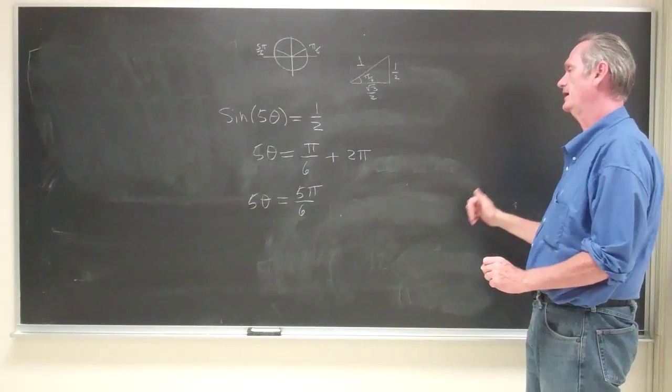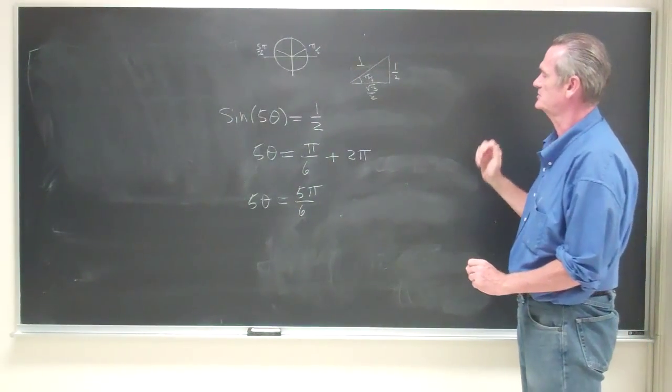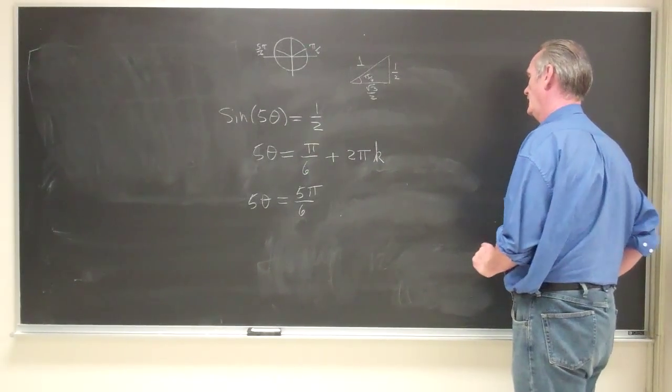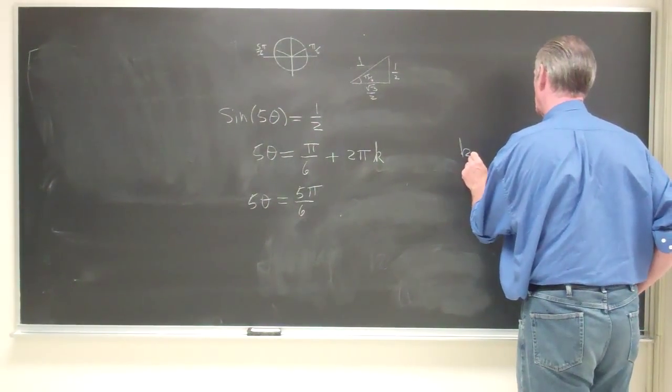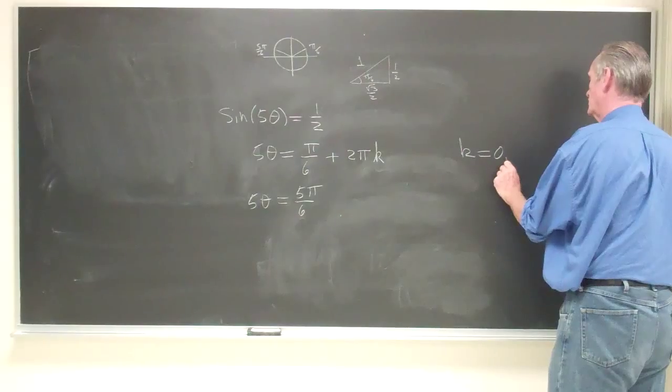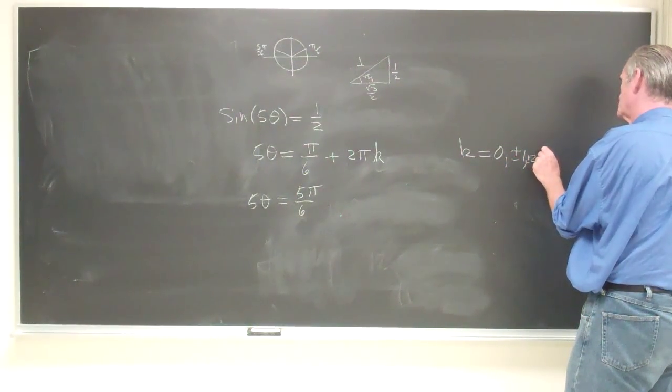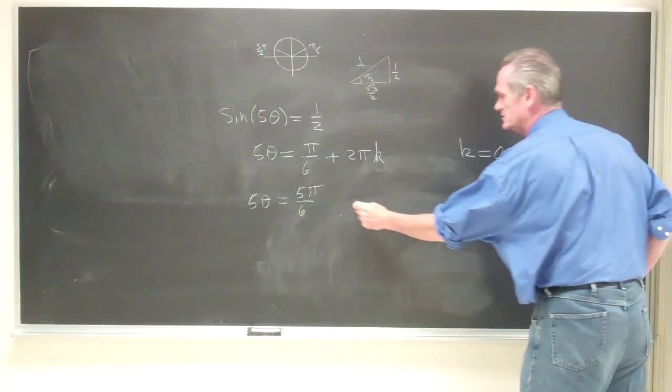Then I need to add in 2 pi again, and then I need to add 2 pi again, so what I'm going to do is I'm going to add in 2k pi, and k is going to be either equal to 0 or plus or minus 1 or plus or minus 2 or plus or minus 3, and so forth.